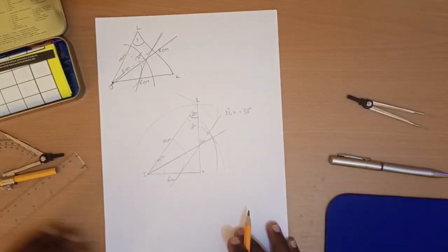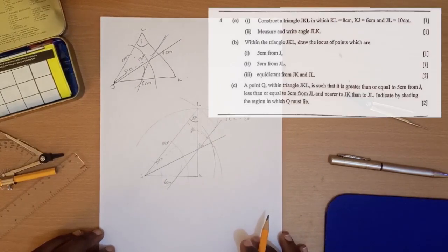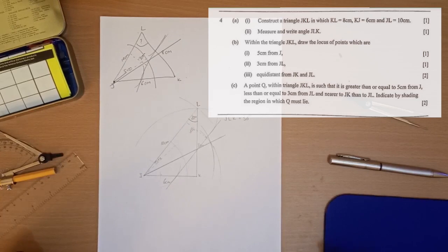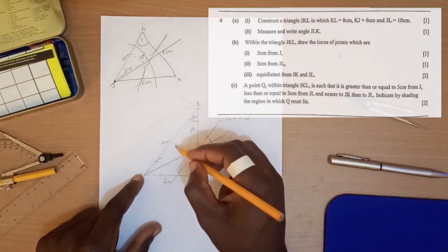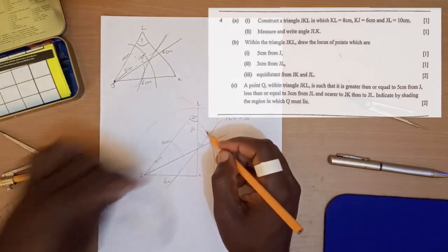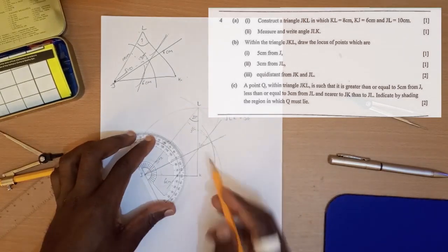Finally we go to our last question, which is D. A point Q within triangle JKL is such that it is greater than or equal to 5 cm from J, less than or equal to 3 cm from JL, and nearer to JK than to JL. Indicate by shading the region where Q must lie. Q has 3 conditions to satisfy. The first condition is that Q is greater than or equal to 5 cm from J. So 5 cm from J ends on this arc. So it is greater than or equal to, so it should be above there. Everything beneath going this side has been cancelled. We are going in front there.